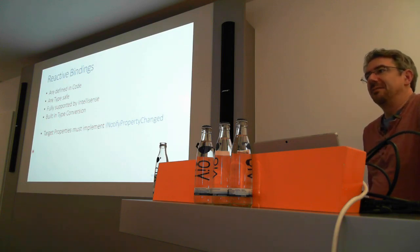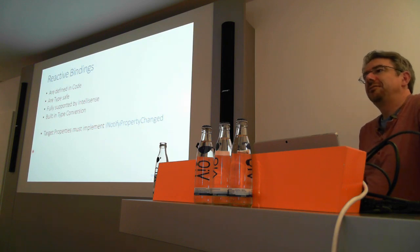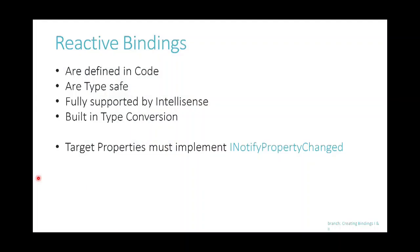Reactive bindings: if you use Reactive UI, you use reactive bindings instead of normal XAML bindings. They are defined in code-behind, which at first doesn't look attractive, but once you work with it you understand why. They are type-safe — which is not the case with normal bindings — they support full IntelliSense, and have a built-in type conversion system, so you don't have to write separate type converters. Target properties must at least implement INotifyPropertyChanged; the easiest way is to use ReactiveObject.